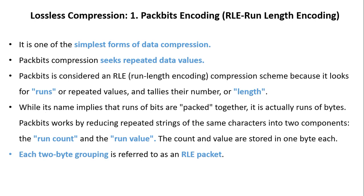Packbit works by reducing a repeated string of the same character into two components: the run count and the run value. The count and value are each stored in one byte, and each two-byte grouping is referred to as an RLE packet.